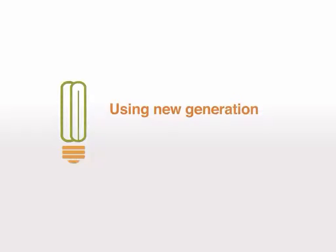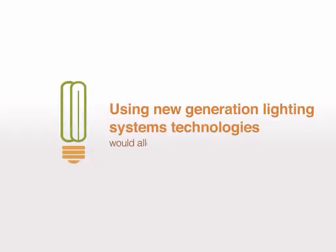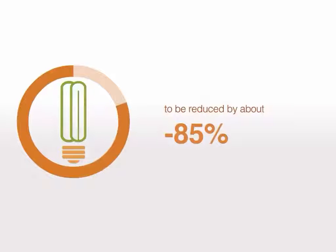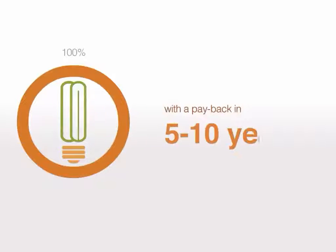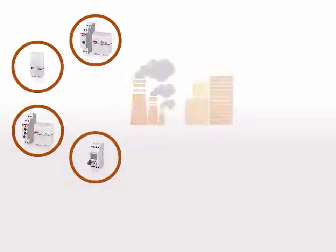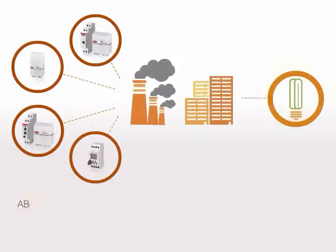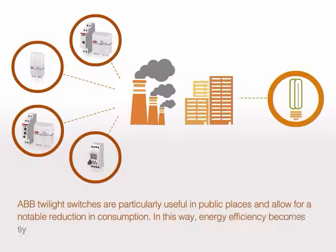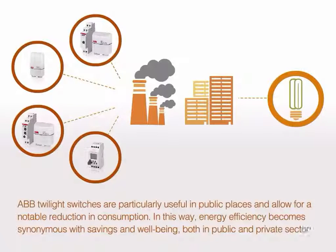Using new generation lighting systems and technologies would allow energy consumption and costs to be reduced by about 85%, with a payback in five to ten years. ABB twilight switches are particularly useful in public places and allow for a notable reduction in consumption and gains in energy efficiency. In this way, energy efficiency becomes synonymous with savings and well-being, both in public and private sectors.